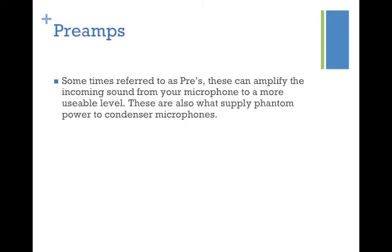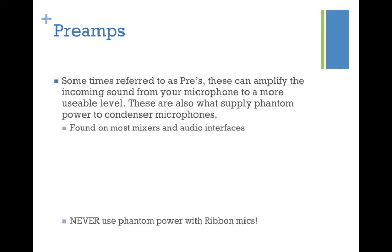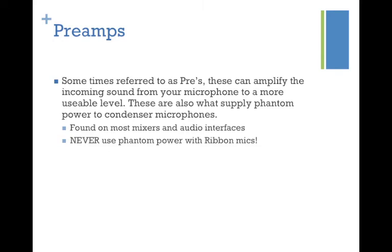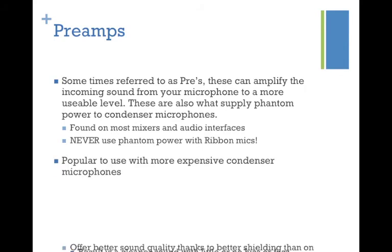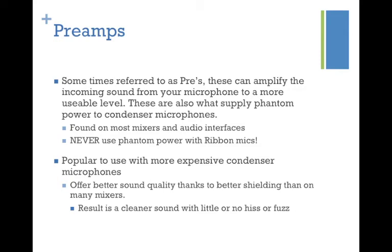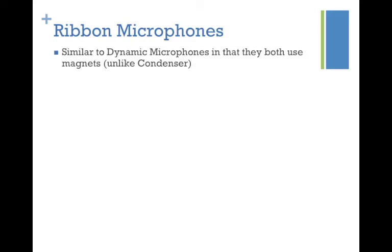Preamps — sometimes called 'pre's' — amplify the incoming sound from your microphone to a more usable level. This is especially helpful with a dynamic microphone where your source isn't very loud. Preamps also supply phantom power for condenser microphones and are found on most mixers and audio interfaces. With more expensive condenser mics, you'll want a dedicated external preamp for better sound quality thanks to better electrical shielding inside the preamp itself, resulting in a cleaner sound with less hiss or fuzz.